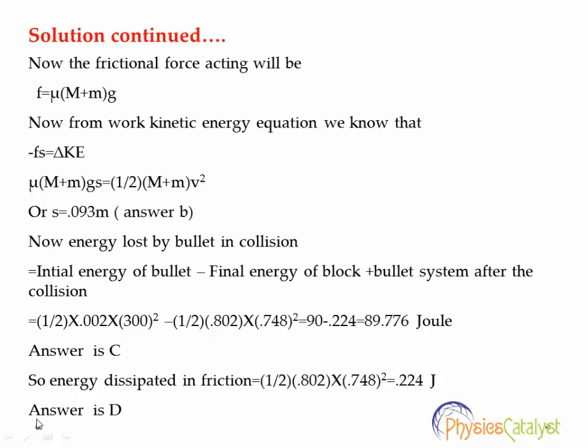The energy lost by the bullet in the collision equals the initial kinetic energy of the bullet minus the final kinetic energy of the block-bullet system: ½(0.002)(300²) − ½(0.002)(0.748²) = 29.776 joules. This is answer C. For answer D, the energy dissipated by friction: since the velocity of the system is 0.748 m/s, the energy dissipated is ½(0.802)(0.748²) = 0.224 joules.